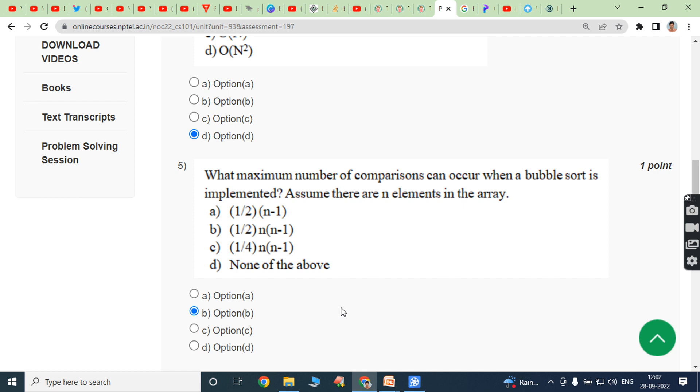Because the time complexity of bubble sort is order of n square in best case, average case, and worst case. So half into n into n square minus n, so highest polynomial is n square. So that answer is option B.